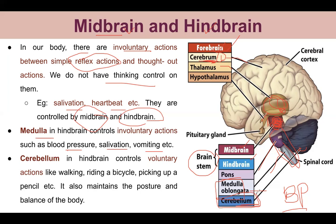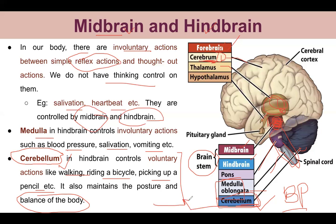Now the cerebellum controls functions like walking, writing, riding a bicycle, picking up a pencil, maintaining our posture, and body balance. The reason we don't fall while walking is because of balance maintained by the cerebellum. So the cerebellum controls voluntary actions involving coordination. Basically, the hindbrain controls some involuntary actions and some voluntary actions - both types are controlled by the hindbrain.